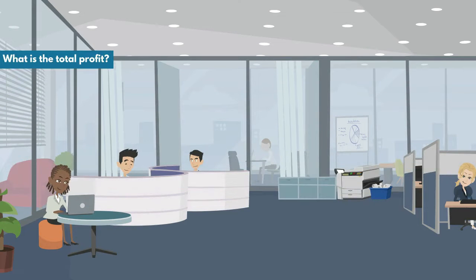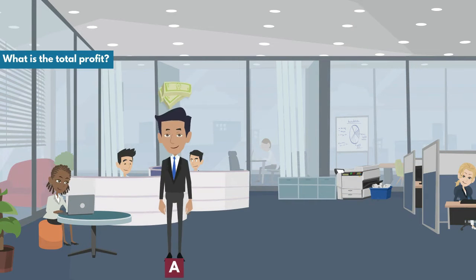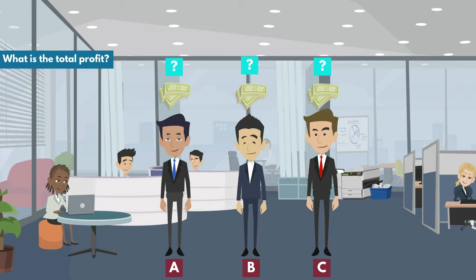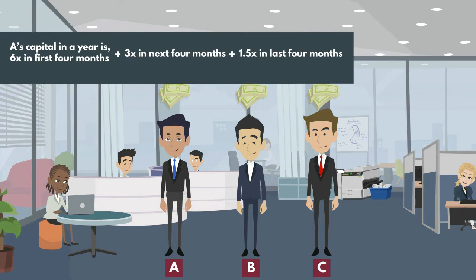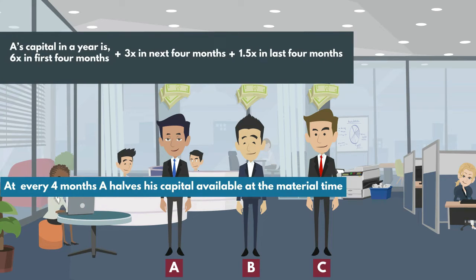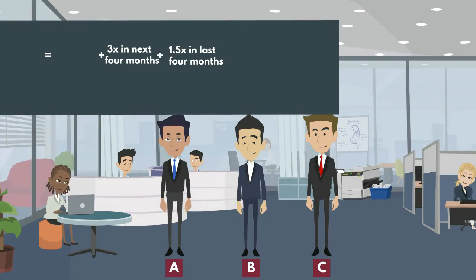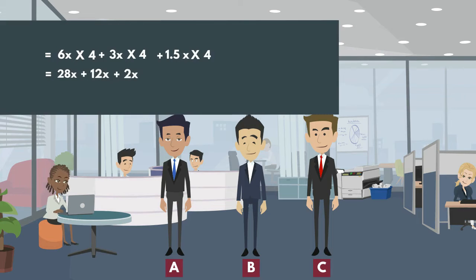We need to find A's, B's, and C's capital contribution over the year. Let us assume: capital of A is 6x, capital of B is 2x, and capital of C is 7x. A's capital over the year: 6x for first 4 months, 3x for next 4 months, 1.5x for last 4 months — because every 4 months A halves his capital. So: 6x×4 + 3x×4 + 1.5x×4 = 42x.